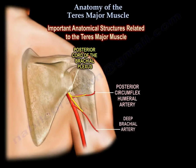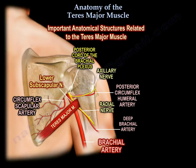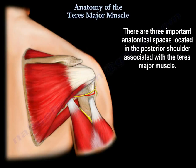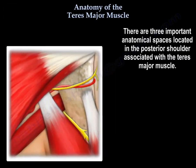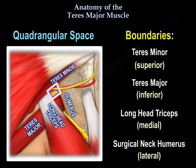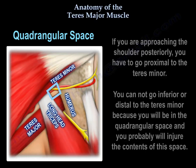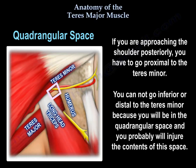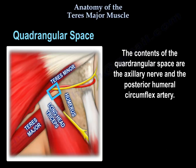There are three important anatomical spaces located in the posterior shoulder associated with the teres major muscle. The quadrangular space has boundaries: the teres minor muscle superiorly, the teres major muscle inferiorly, the long head of the triceps medially, and the surgical neck of the humerus laterally. If you approach the shoulder posteriorly, you must go proximal to the teres minor to avoid entering the quadrangular space.